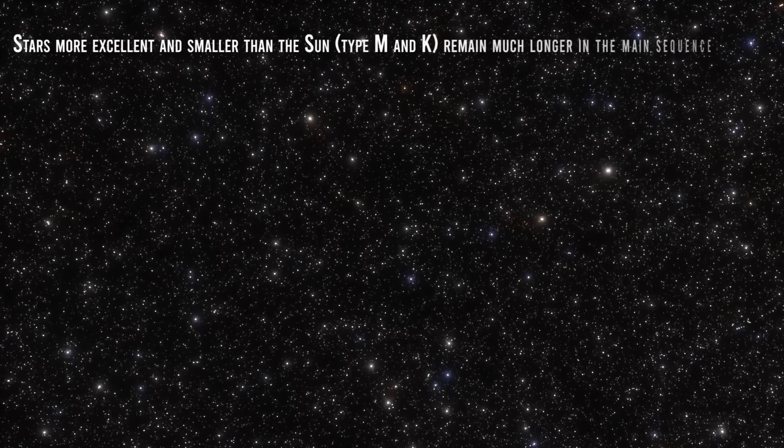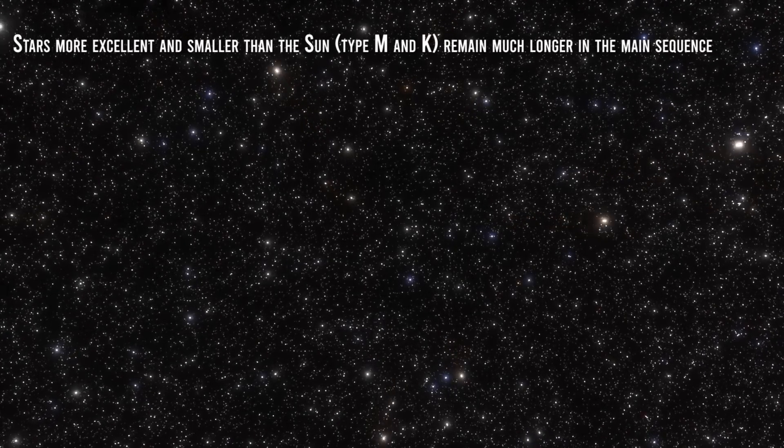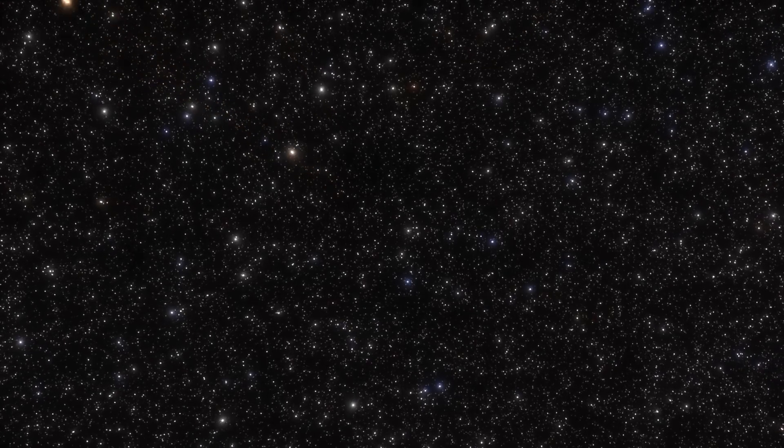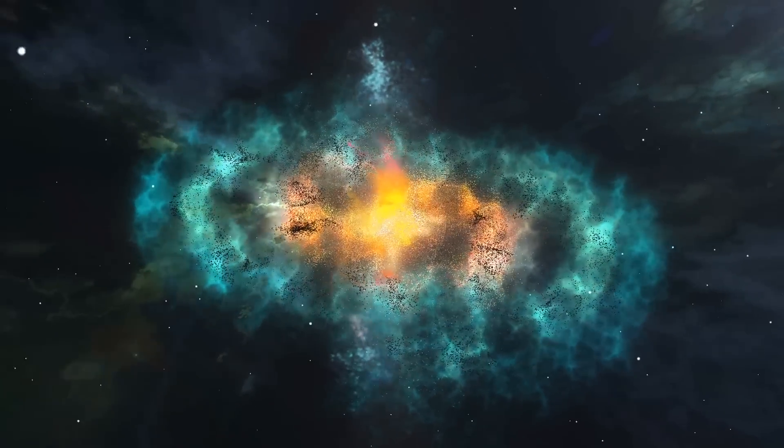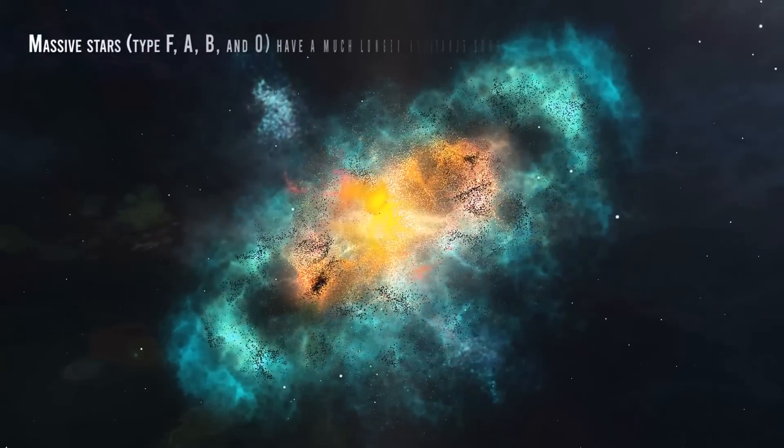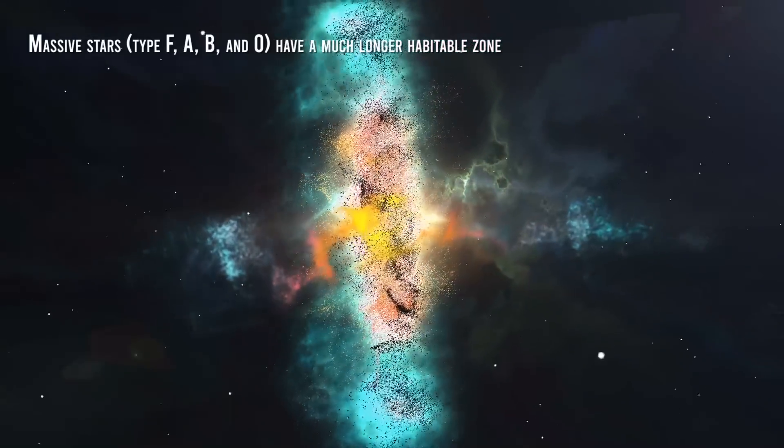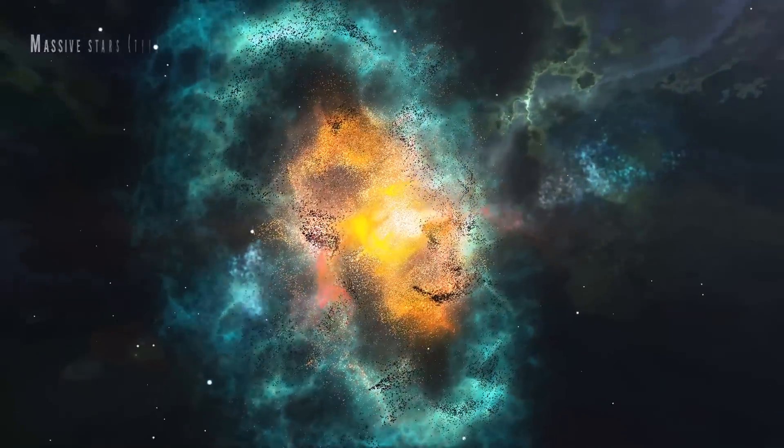Stars cooler and smaller than the Sun, type M and K, remain much longer in the main sequence. Their reduced habitable zone varies very little throughout their lifetime. In comparison, more massive stars, type F, A, B, and O, have a much longer habitable zone, which varies significantly throughout their short life.